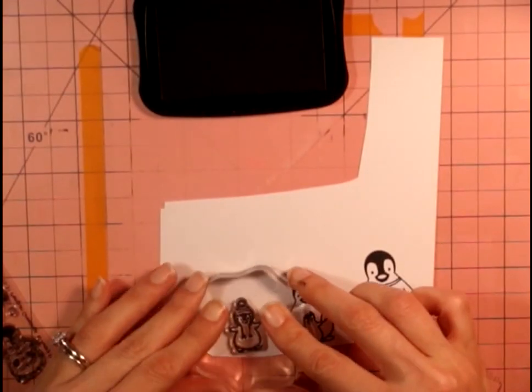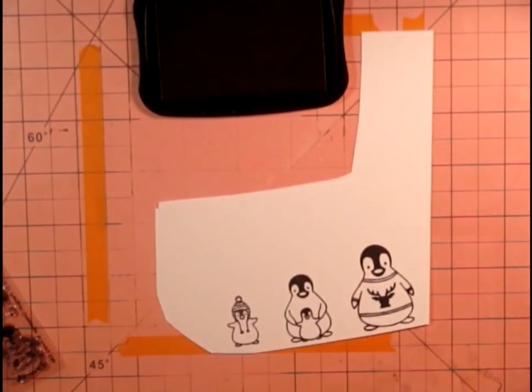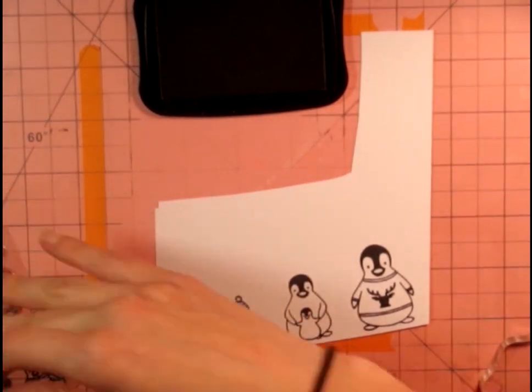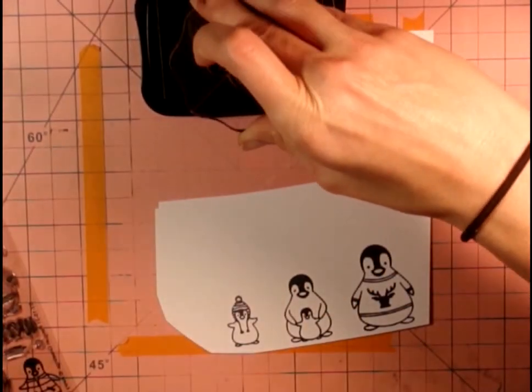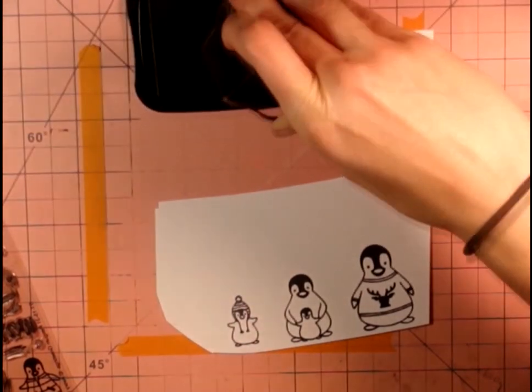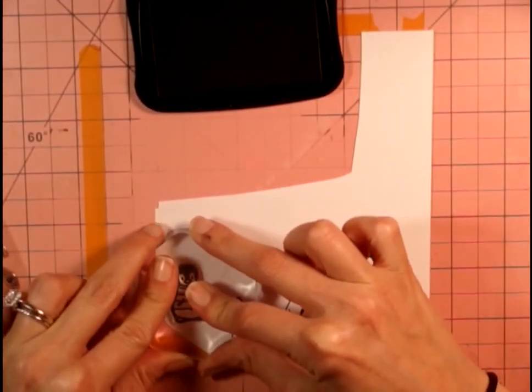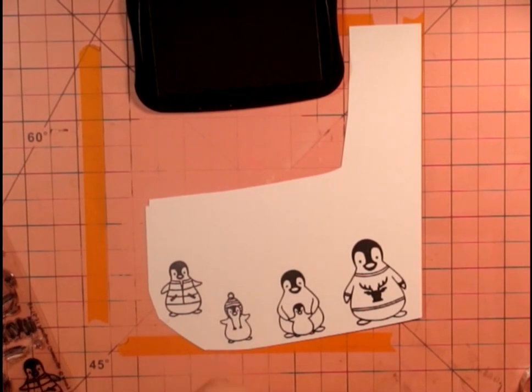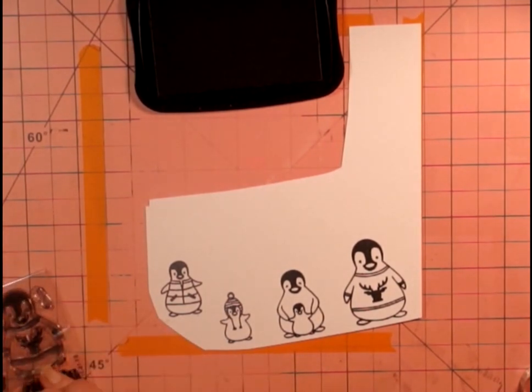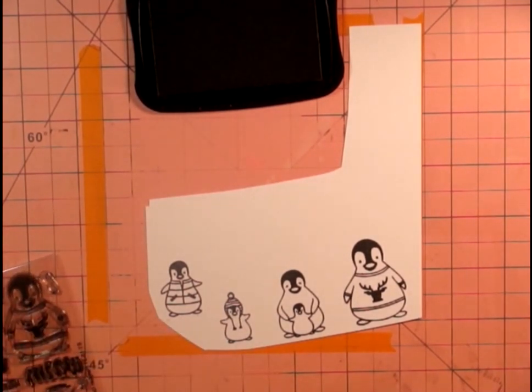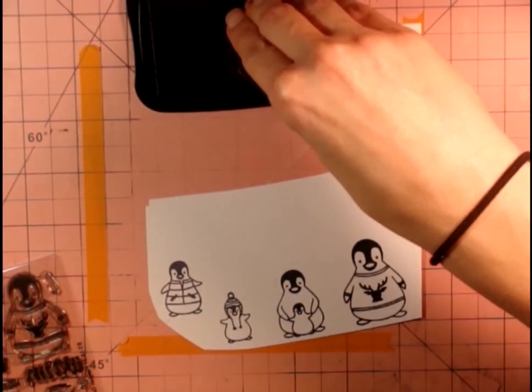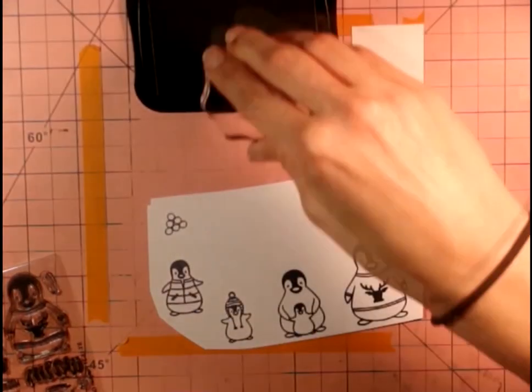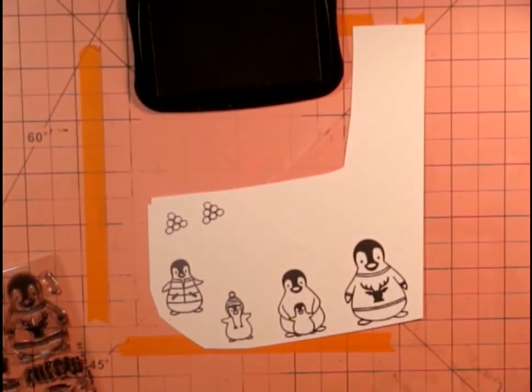And I will link to the stamp set in the description area below. And then there's the mama and the baby. And then another little sweet penguin. And then one with a cute little jacket. And then those are little piles of snowballs.